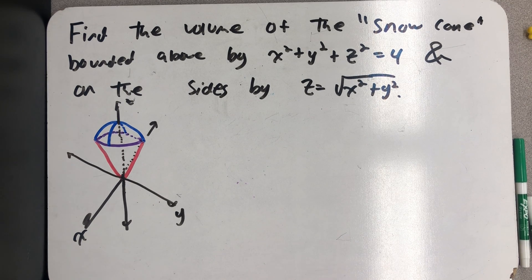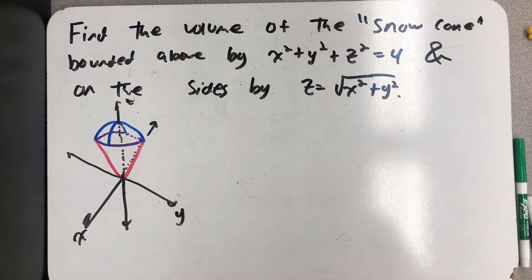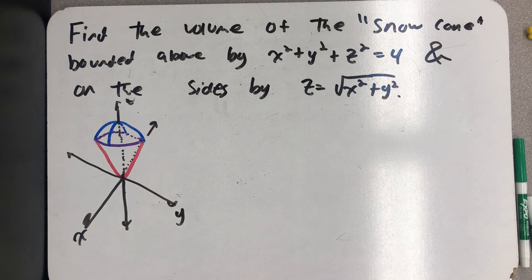In one of our previous videos, we described the snow cone bounded above by x squared plus y squared plus z squared equals 4, and on the sides by the cone, z equals the square root of x squared plus y squared.